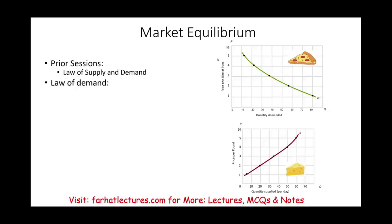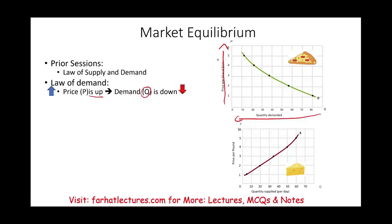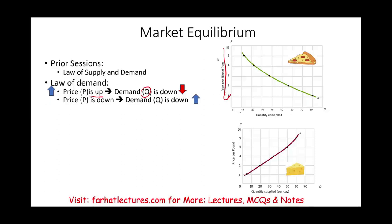The law of demand — what does that state? If the price of something goes up, what's going to happen? If prices go up, we are going to demand less of it. The demanded quantity is less. So price is up, demand down. And if the prices of something we want to buy is down, the quantity demanded is up. Notice it's an inverse relationship between price and demand.